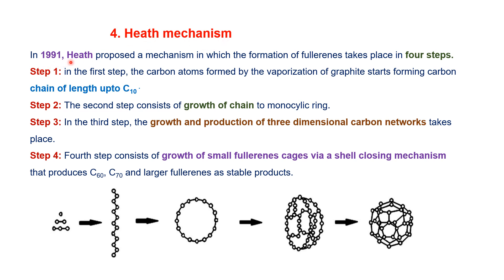The Heath mechanism: in 1991, Heath proposed a mechanism in which fullerene formation takes place in four steps. In step one, carbon atoms formed by vaporization of graphite start forming chains up to C10. In step two, the chain grows into a monocyclic ring. In step three, growth and production of the three-dimensional carbon network takes place. In step four, small fullerene cages grow via a shell-closing mechanism, producing C60, C70, and some larger fullerenes as stable products.